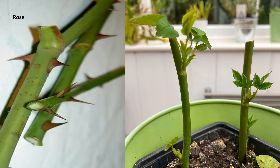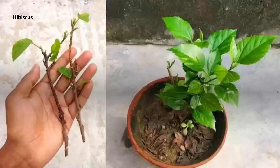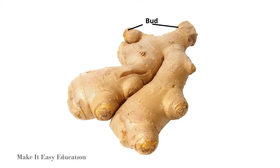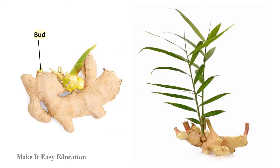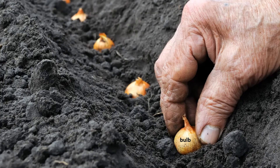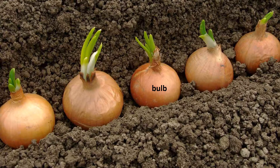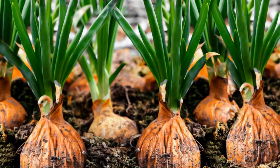The stem of plants such as the rose can be used to grow new plants. The stem of hibiscus can also be used to grow new plants. In ginger, the stem has small structures called buds, and from the bud a new plant can grow. An onion has a special structure called a bulb, and the new plant can develop from the bulb.